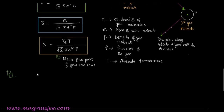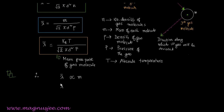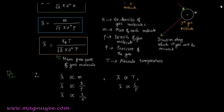We can mention on which factors mean free path depends. Mean free path is directly proportional to the mass of each molecule and to the absolute temperature. Mean free path is inversely proportional to density, to the square of the diameter of the gas molecule, and to the pressure of the gas — that is, lambda bar is proportional to 1/P.